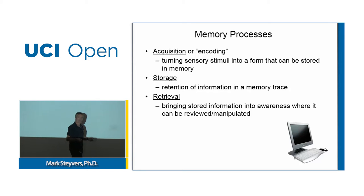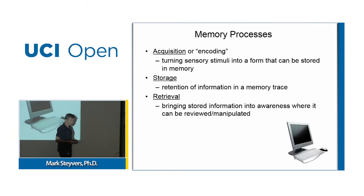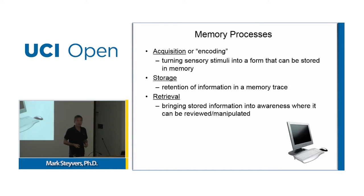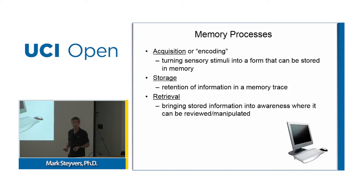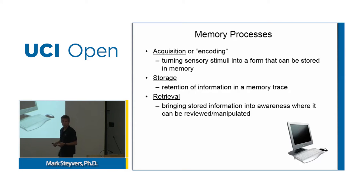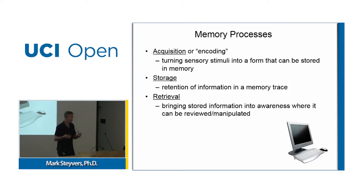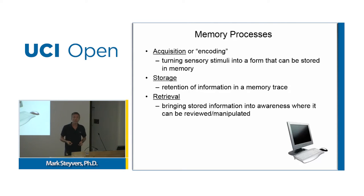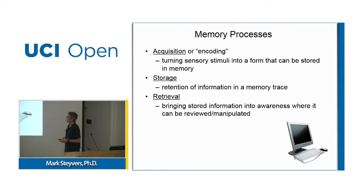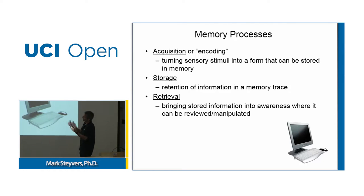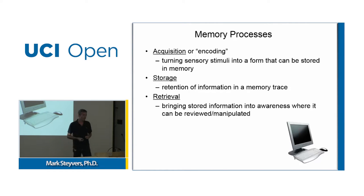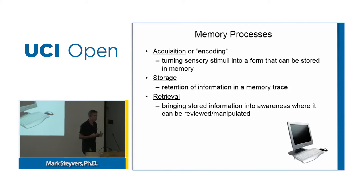There's a rough analogy with computers in general. There are various ways to encode information — to get stuff into the computer through a mouse, keyboard, or touchpad. There are various ways to store information in memory, and ways to get it out. But human memory works very differently from computers.